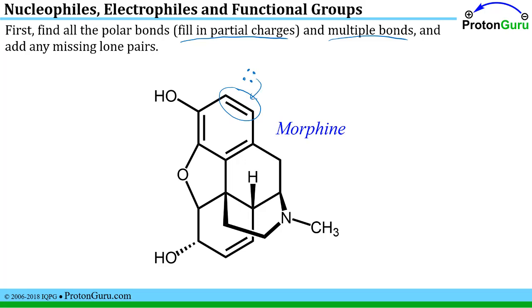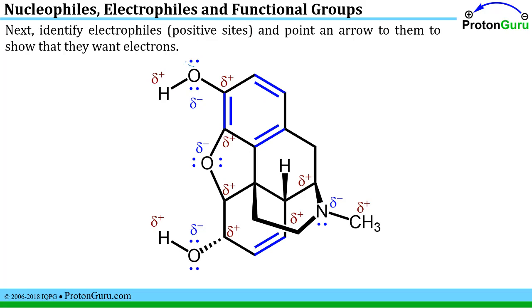We'll also want to add any missing lone pairs, because an electrophile like a proton would attract a lone pair towards it. Positive charges attract negative charges like electrons. Here I've filled in all the lone pairs — you want to make sure you can do that on your own. I've identified all the partial positive and partial negative ends of all the polar bonds, and I've colored all the multiple bonds in blue for this example.